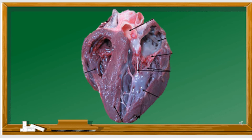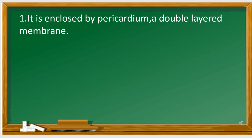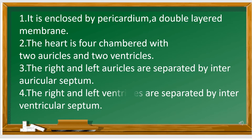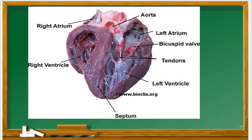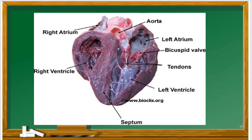Both the right and left auricles are separated by the interauricular septum. Similarly, both the right and left ventricles are separated by the interventricular septum. The right auricle opens into the right ventricle by the right auriculoventricular aperture, guarded by a tricuspid valve. The bicuspid valve is otherwise called the mitral valve. There is another aperture in the pulmonary artery and aorta, guarded by three semilunar valves.